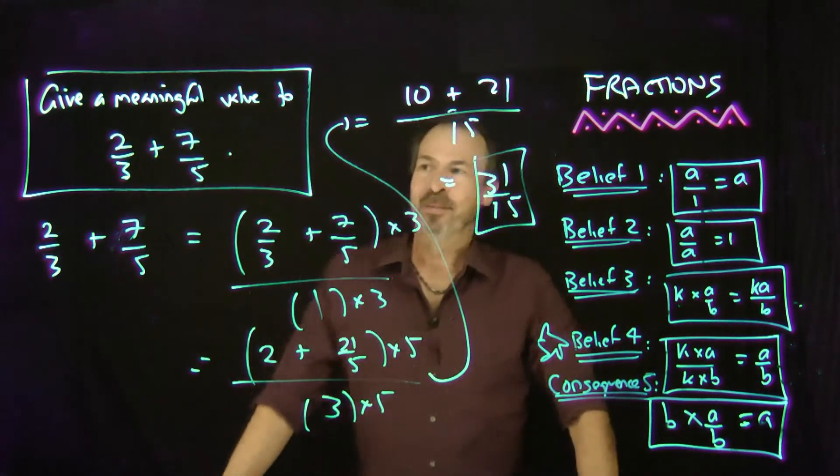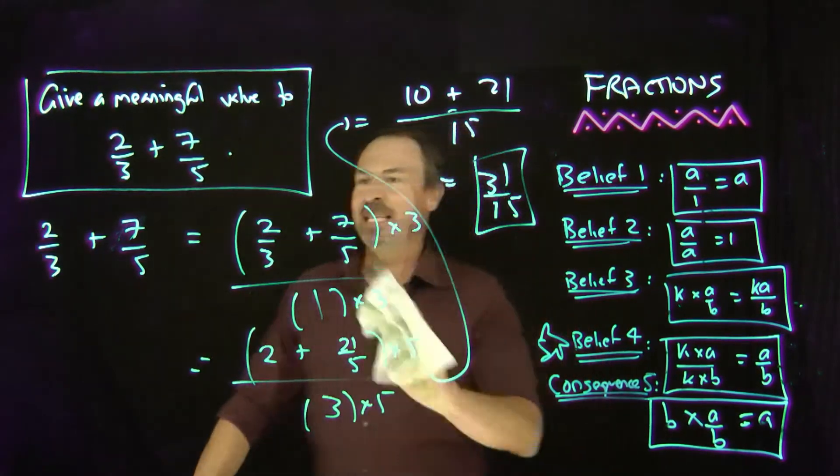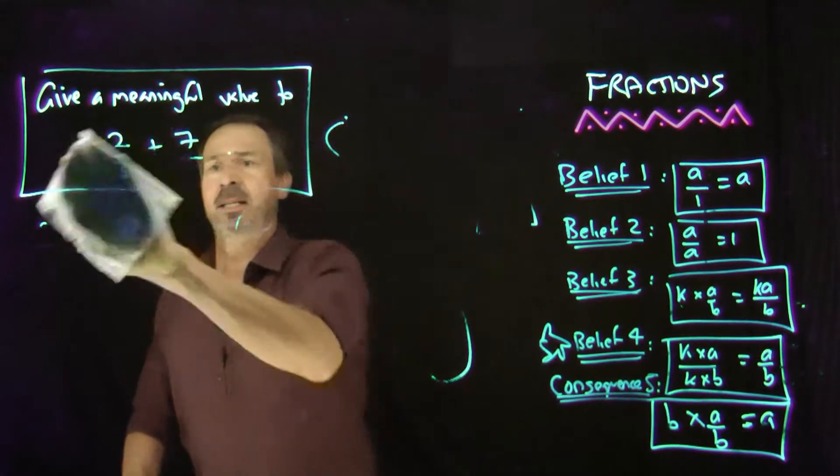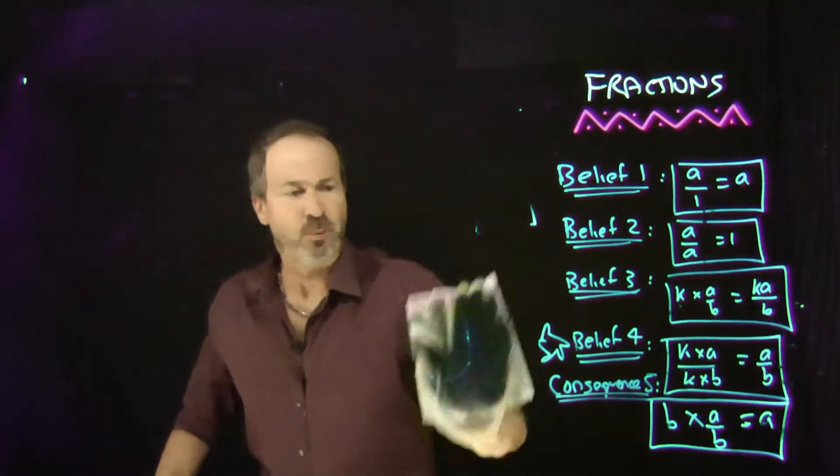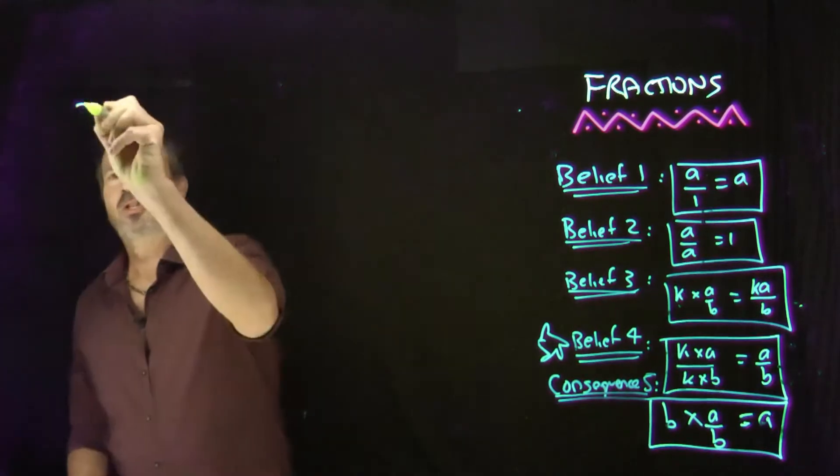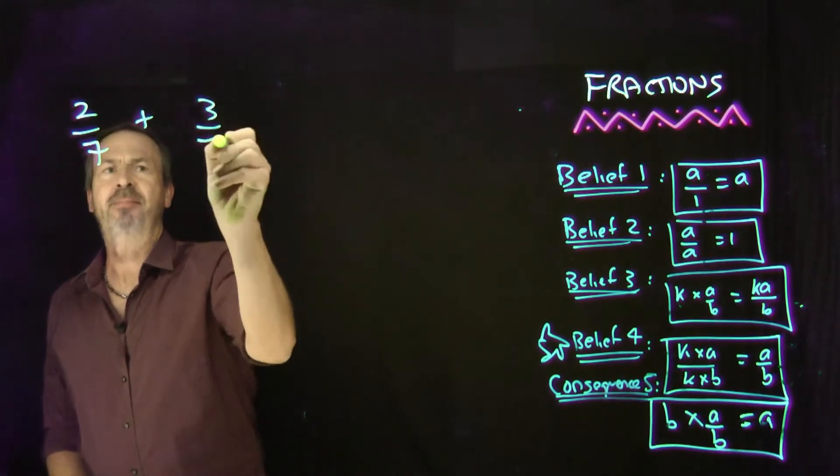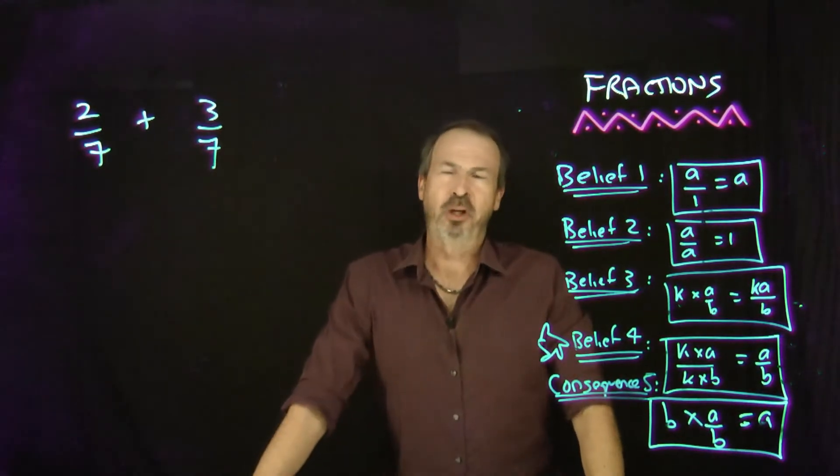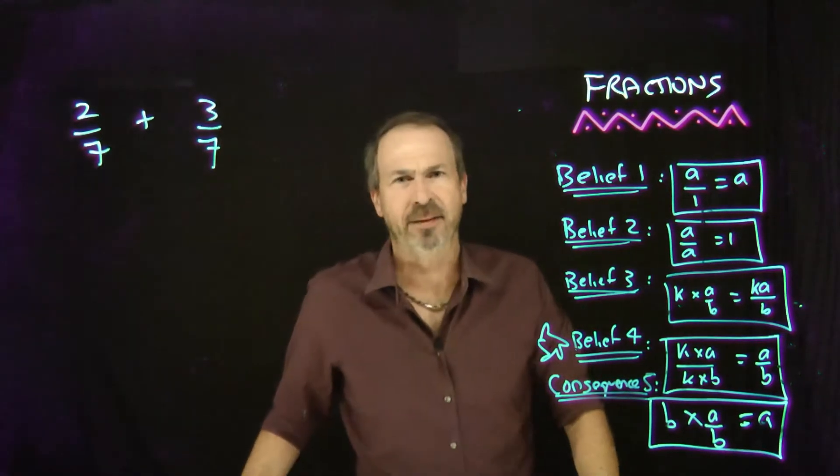Actually, let me point something out. Let me do an easier example. Let's try this one. Let's say, let's remember 2/3 plus 7/5. I want to come back to it. But let's do something like say, 2/7 plus 3/7. Beautiful. Now, if you think about the language. The English language here.